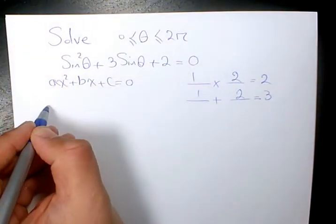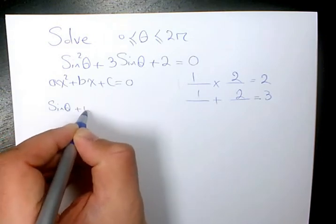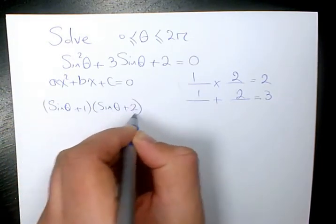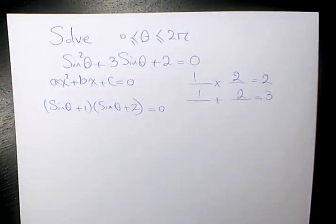So here, I'm going to write it as sine theta plus 1 times sine theta plus 2 equals to 0. Now, we have it in factored form.